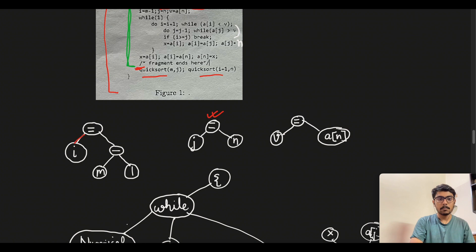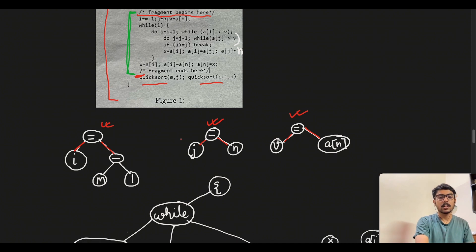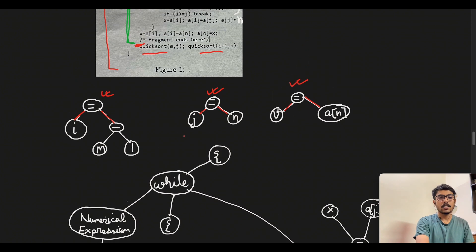The assignment operator will have basically two subtrees, the left and the right. The right subtree will have i which is the variable we need to assign, and the other we have m minus 1. Similarly j equal n and v equal a of n. These will be three separate subtrees of the abstract syntax tree.